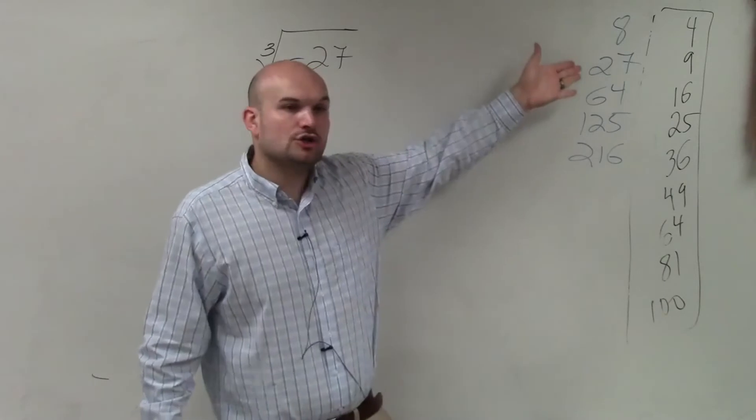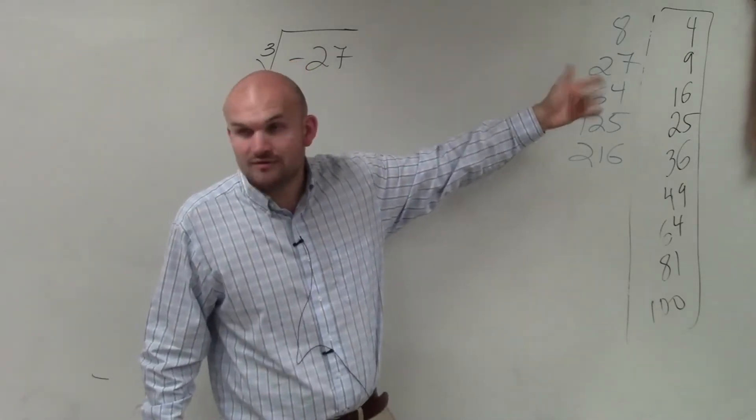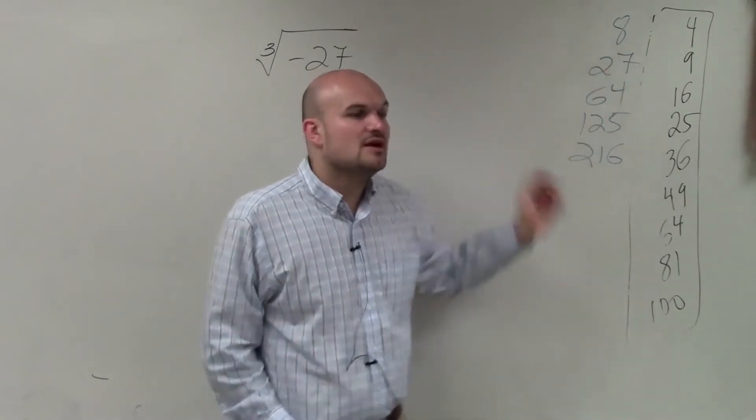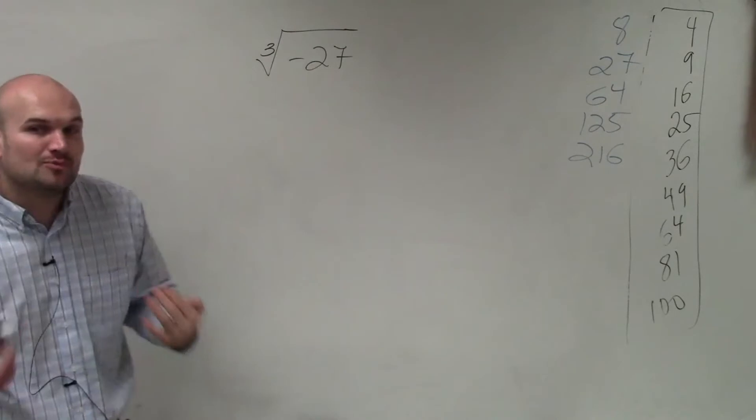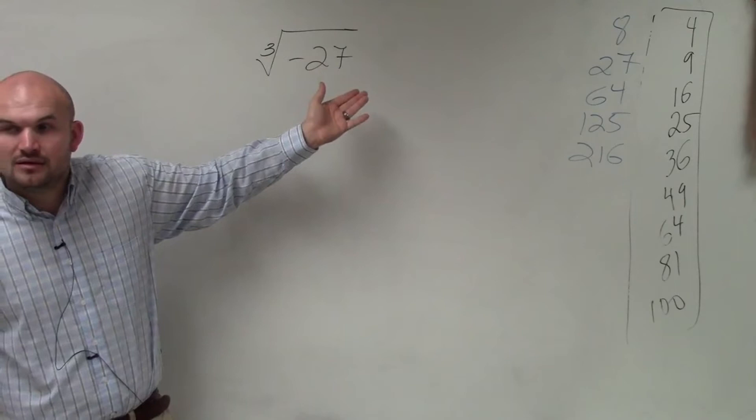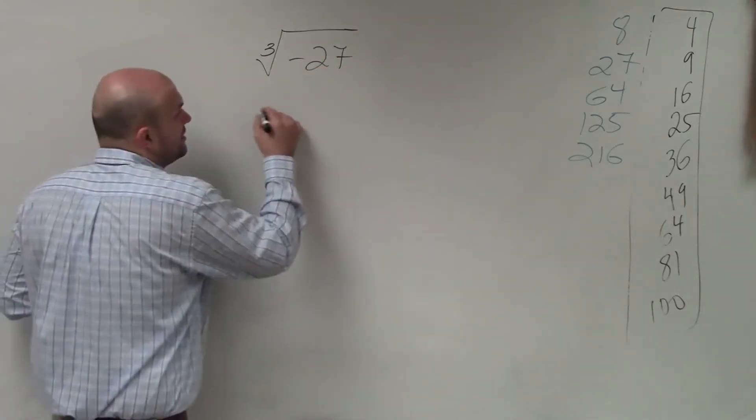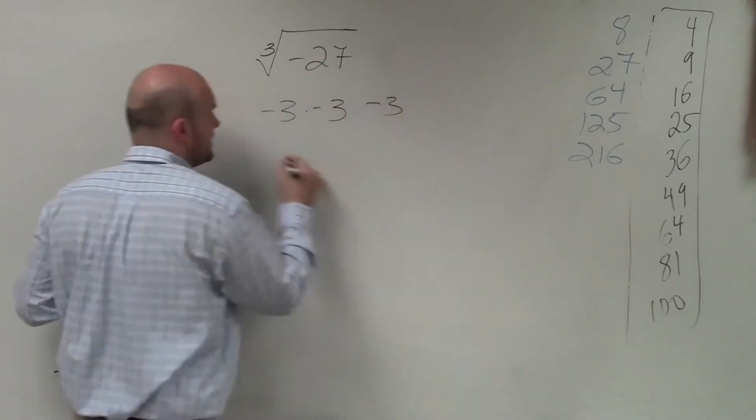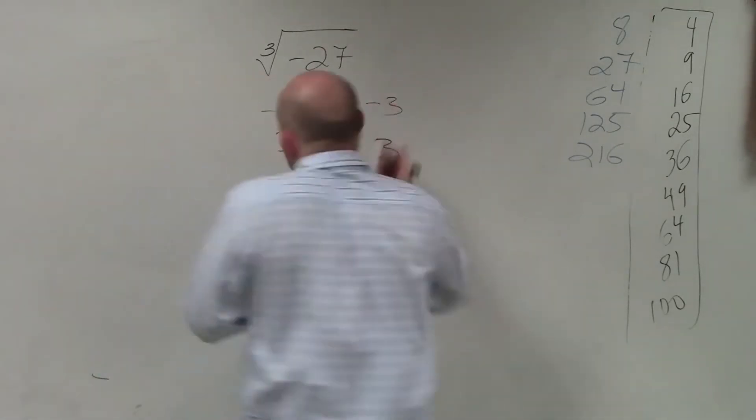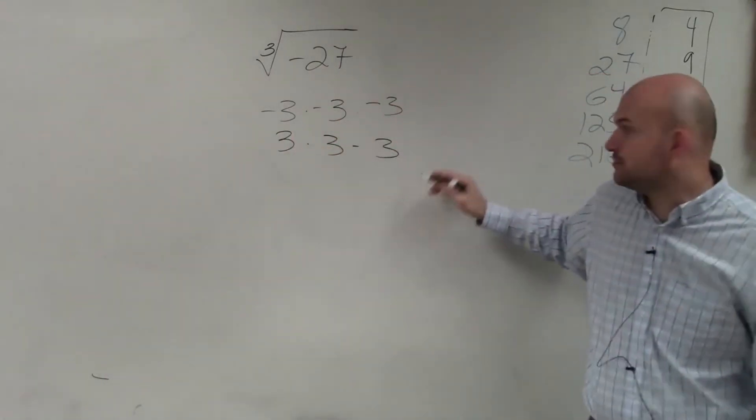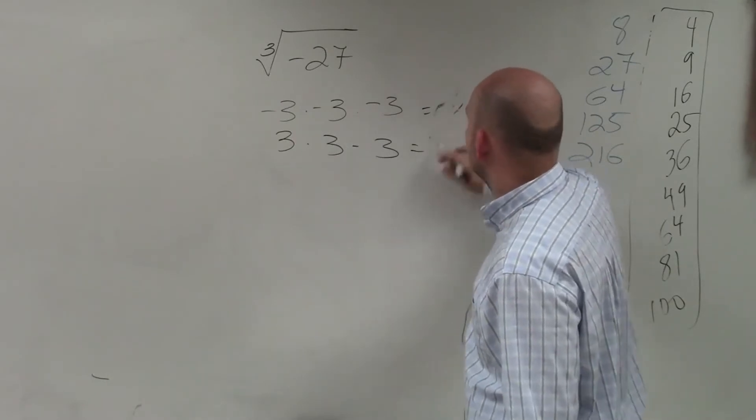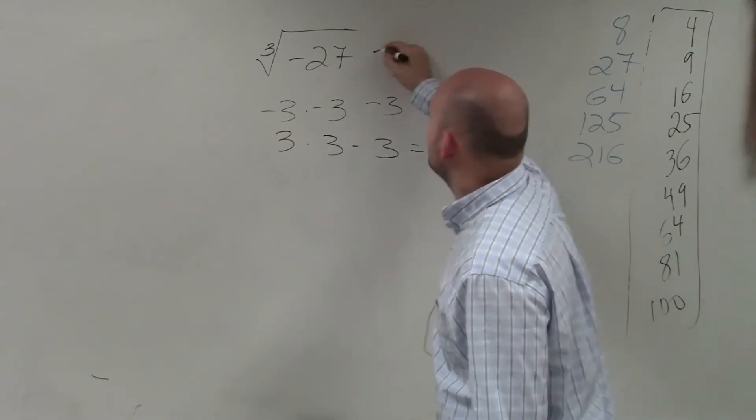These are what we call cube numbers. These are numbers you can take the cube root of because 2 times 2 times 2 is 8, 3 times 3 times 3 is 27. So what you notice is what number multiplied by itself 3 times gives us negative 27? Negative 3. Well, we only have two options. It's either negative 3 times negative 3 times negative 3 or 3 times 3 times 3. And it has to be negative 3 because that gives you negative 27.